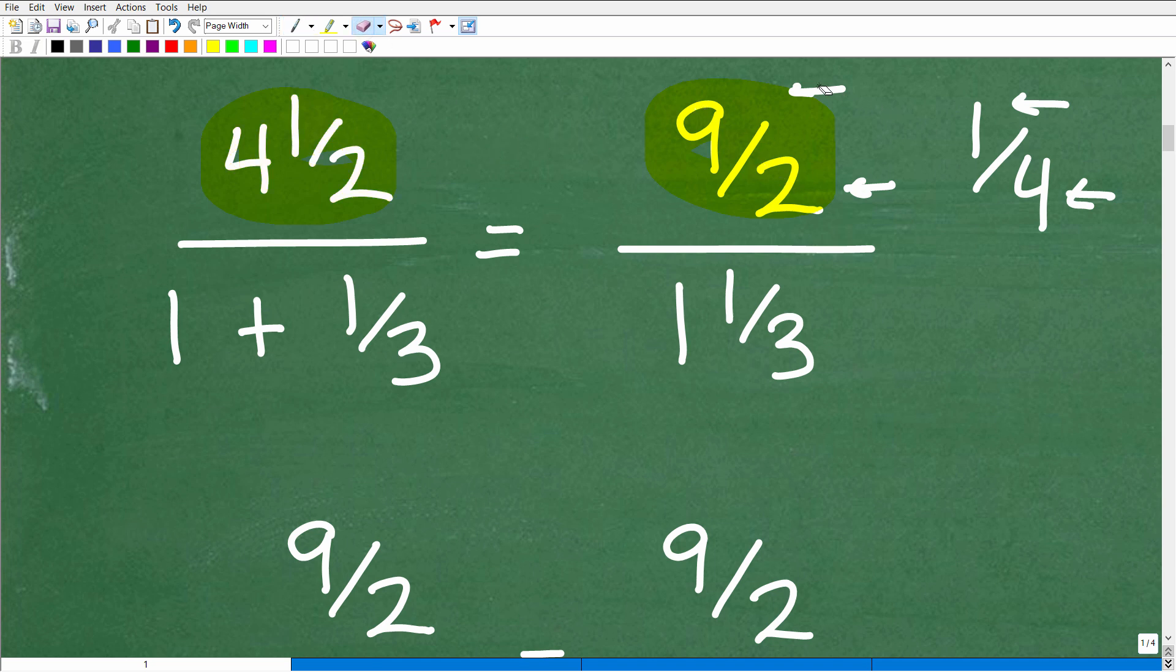Now, what we want to do here is convert this mixed number into an improper fraction. So remember, the way we do that is you're going to take this 2, multiply by 4, so 2 times 4 is 8. 8 plus 1 is 9, so you have 9 halves. So again, these are all kind of foundational concepts of fractions. Hopefully, this was not a problem for you. So we got 4 and 1 half, that's equal to 9 and 1 half.